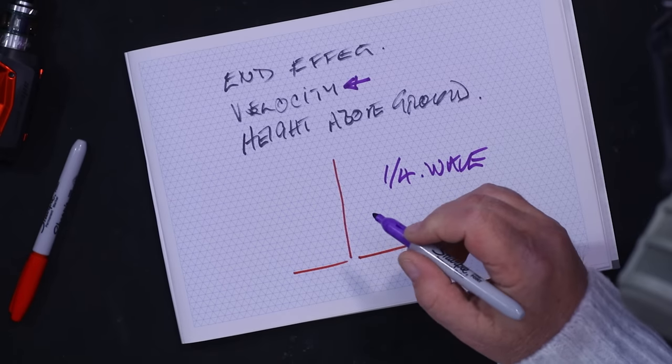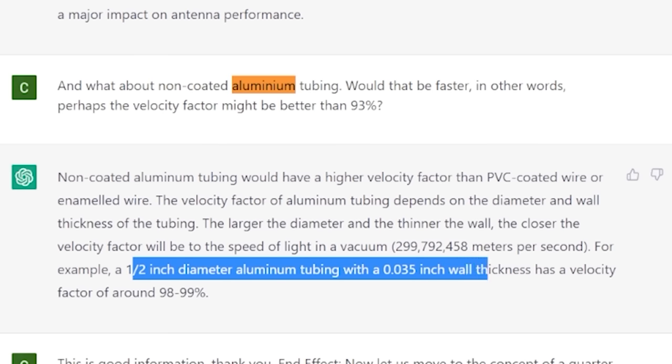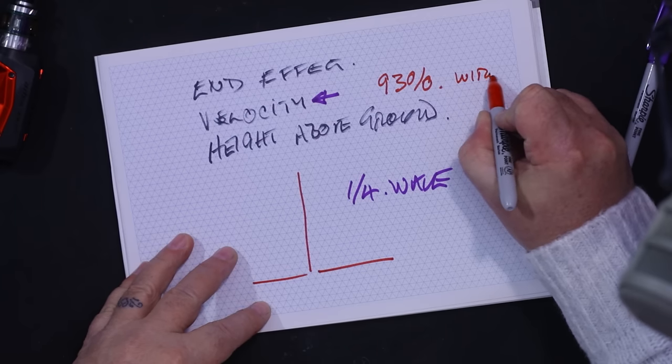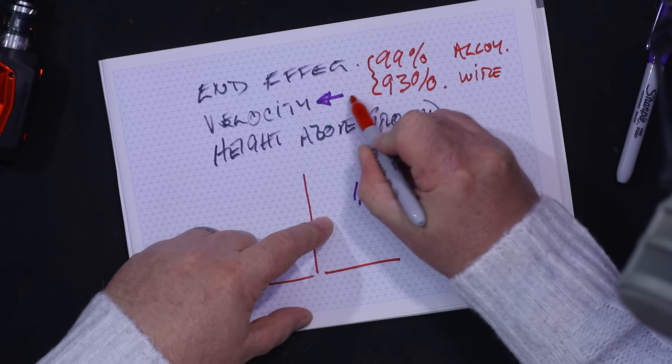End effect — the end of an antenna appears shorter than it actually is because of the speed of light and a few other things. Let's cover velocity factor first. For insulated wire, a piece of copper coated with PVC, the velocity factor is about 92 to 93 percent. A half-inch diameter aluminum tubing with 0.035 inch wall thickness has a velocity factor of about 98 to 99 percent.